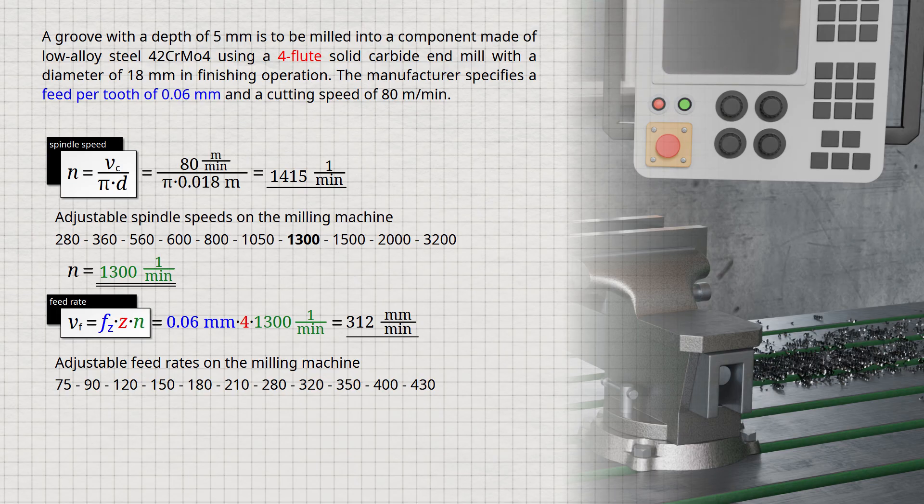However, since feed rates can also only be set in increments here, we must again select the next lower value and thus set a feed rate of 280 millimeters per minute on the machine. If we were to choose a higher value, even if it were closer to the calculated one, we would exceed the manufacturer's specified feed per tooth. This could again damage the cutter or lead to premature wear.